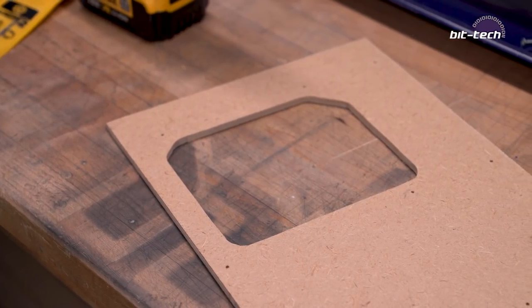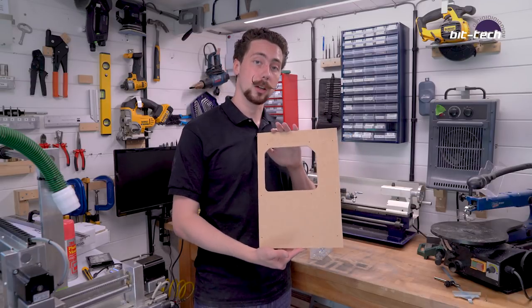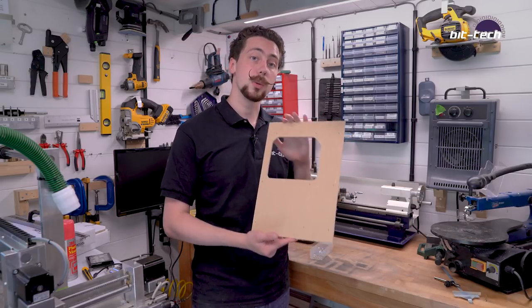So this is the point we've got to with the tray itself so far. I've just removed the template from the front so now we've got a clean surface. The next step is to install standoffs.